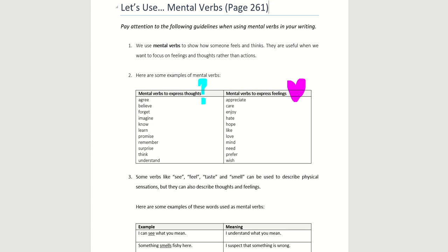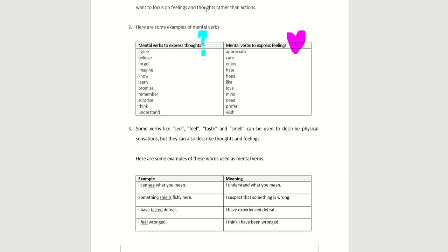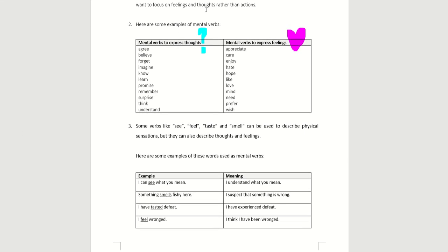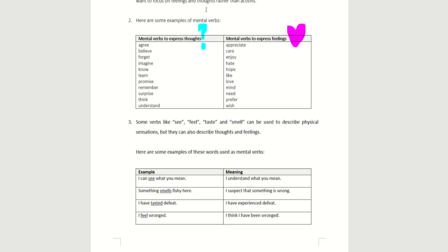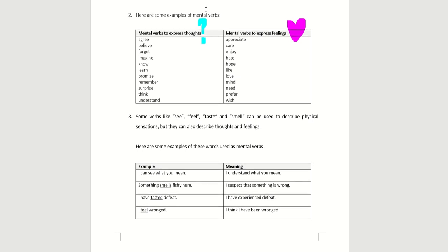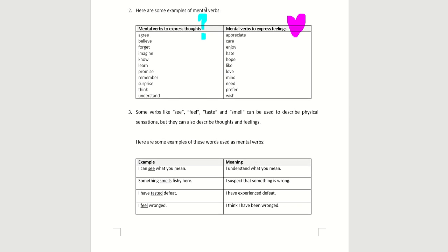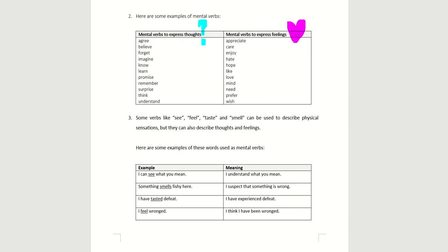Some verbs such as see, feel, taste, and smell can be used to describe physical sensations, but they can also describe thoughts and feelings. Let's take a look.